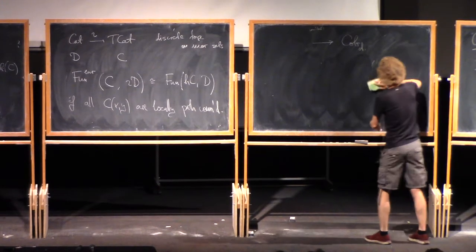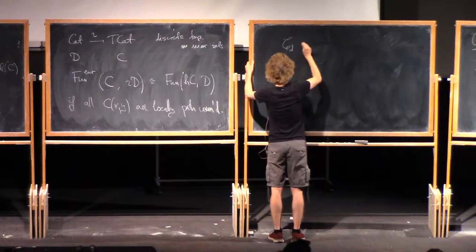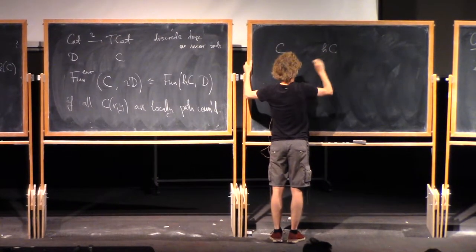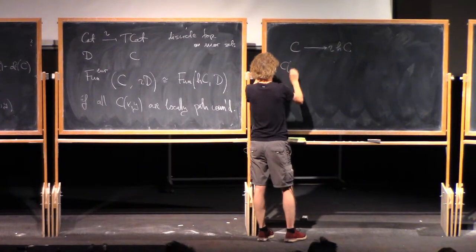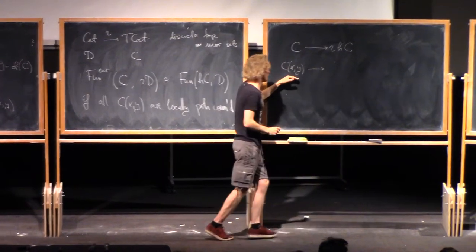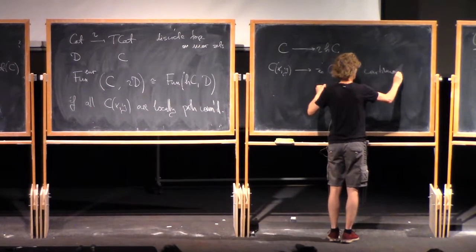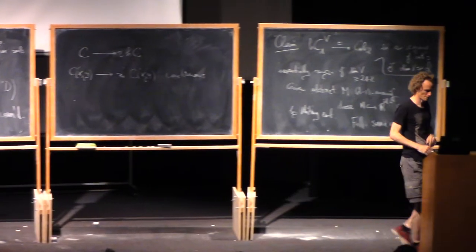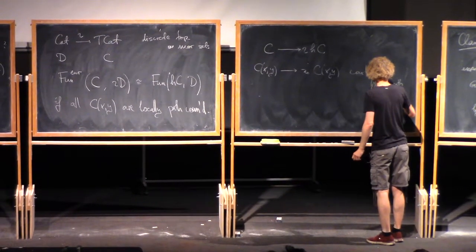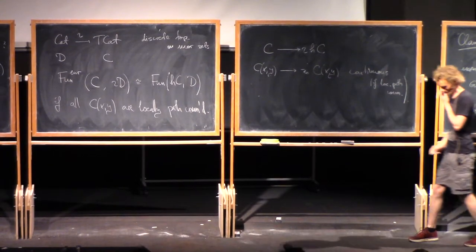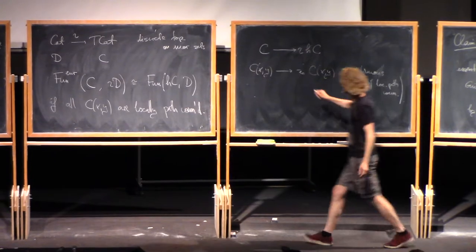And these spaces are locally path connected. So if I take HC and then take iota, I have the same objects. And then a locally path connected space has a continuous map to its own pi_0. To send a point to its path component. This is given the discrete topology. So I can regard that as a functor from there to there.